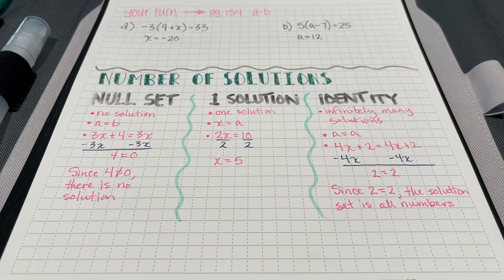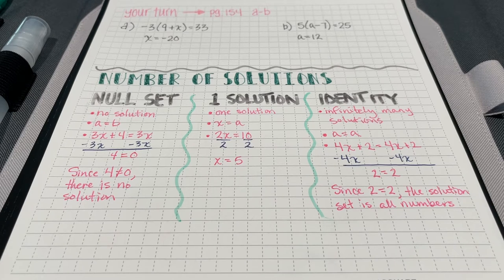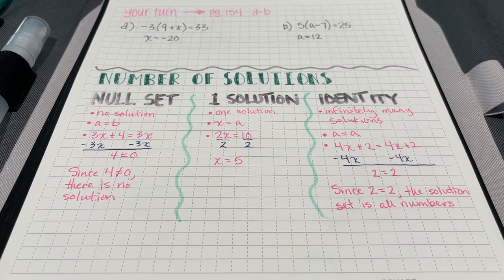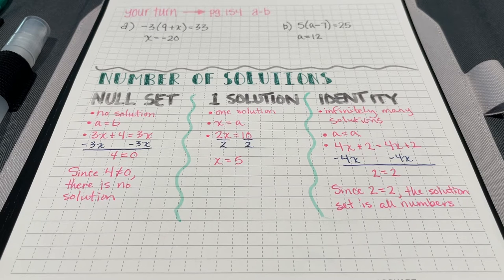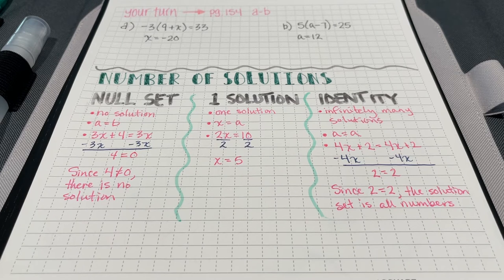Sometimes when we solve equations like this, it's possible that we might not get a solution, which we could call a null set. It's also possible that there's only one solution, like we saw in the problems you just did, A and B. But sometimes, we have something called an identity solution, which means we're going to have infinitely many solutions. Let's see how that works out.